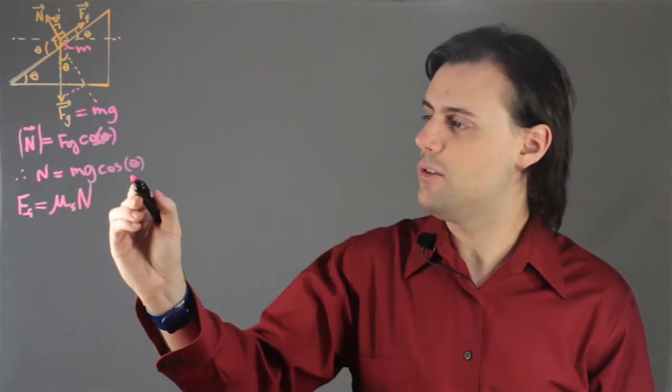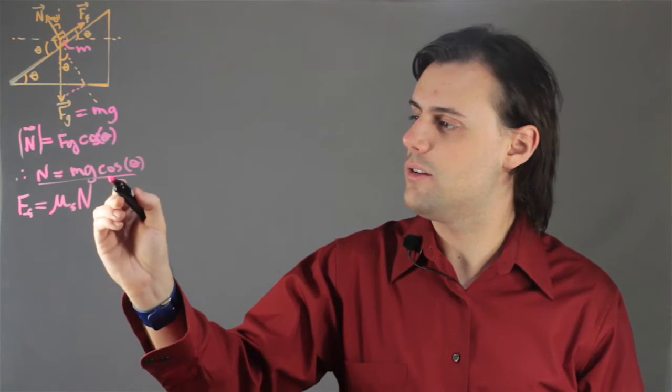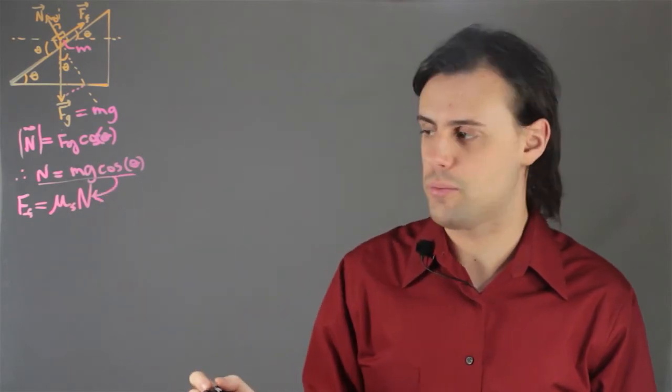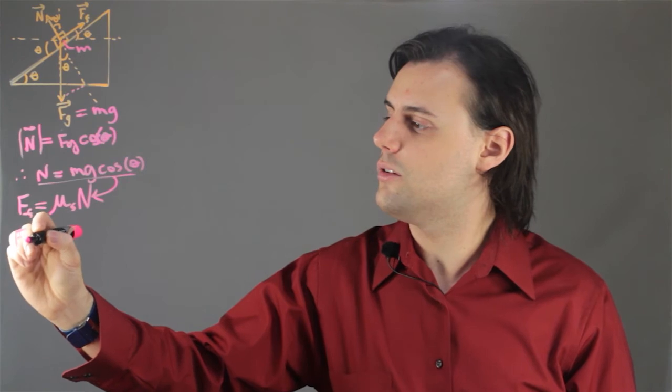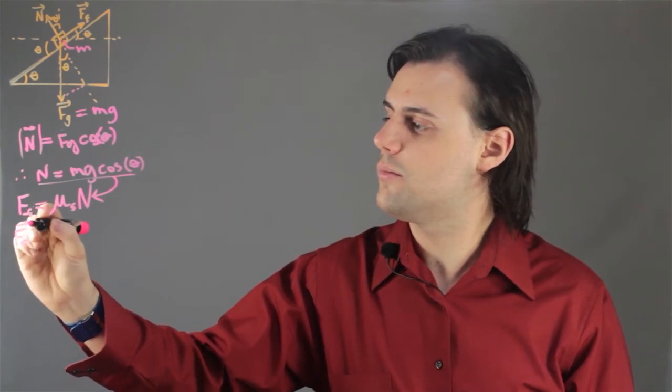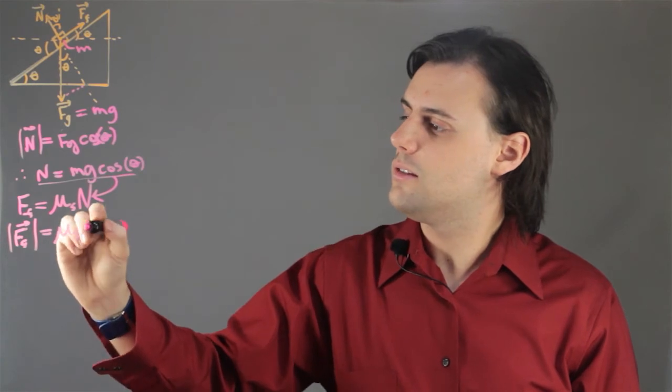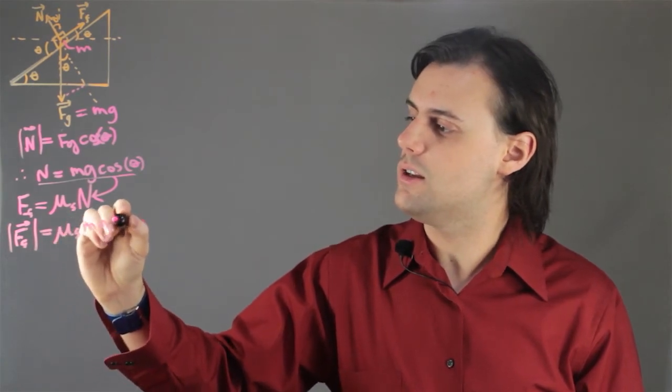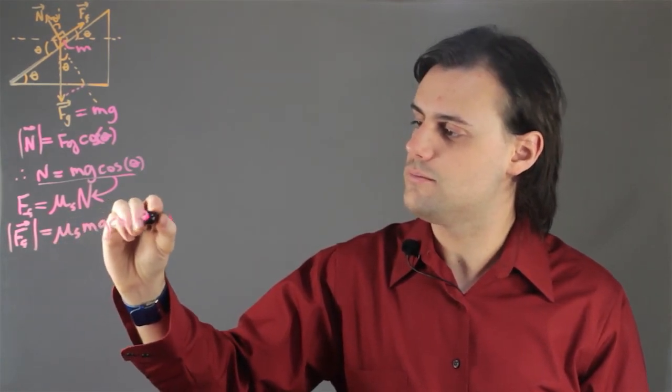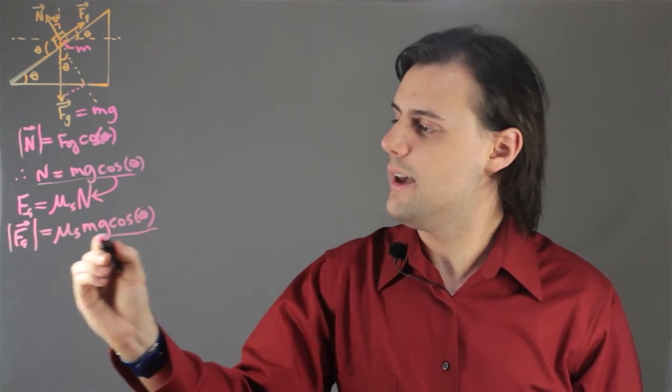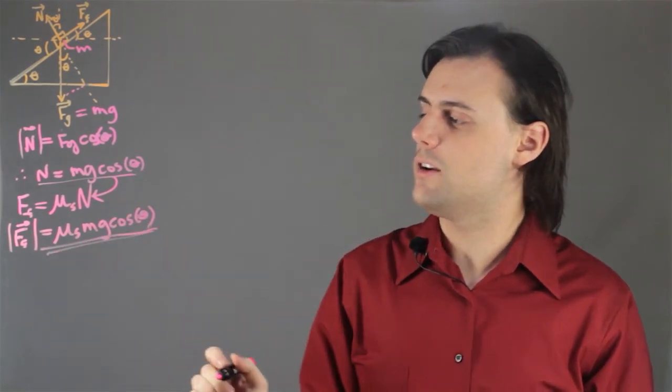So if I just substitute this expression I just found into the friction force expression, I have a magnitude for the friction force, which is equal to mu s times m times g times cosine of theta. And that would be the magnitude of the friction force.